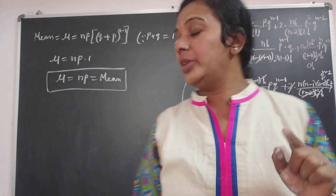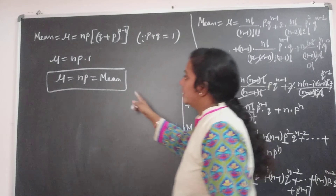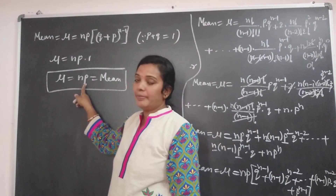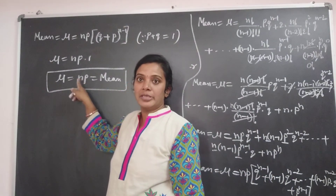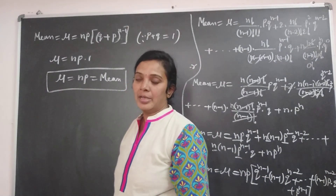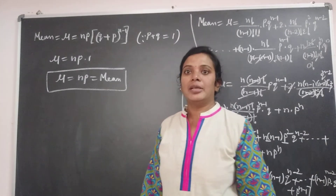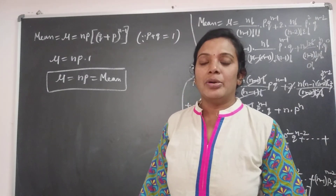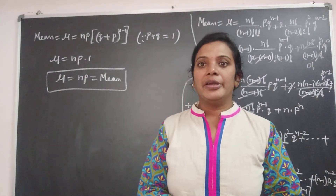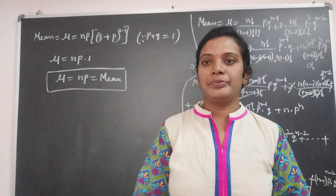This is the mean of the binomial distribution. Here, p is a constant and n is the number of trials, so we are getting that the mean is also a constant of the binomial distribution. Thank you.